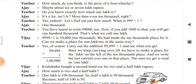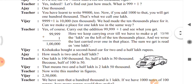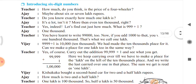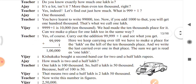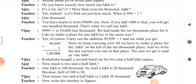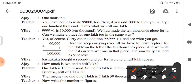The second student, named Vijay, says: '9,999 plus 1 is 10,000. We had made a place for 10,000. Can you make a place for 1,00,000 in the same way?' The teacher says: 'Yes, of course. Carry out the addition of 99,999 plus 1 and see what we get.'